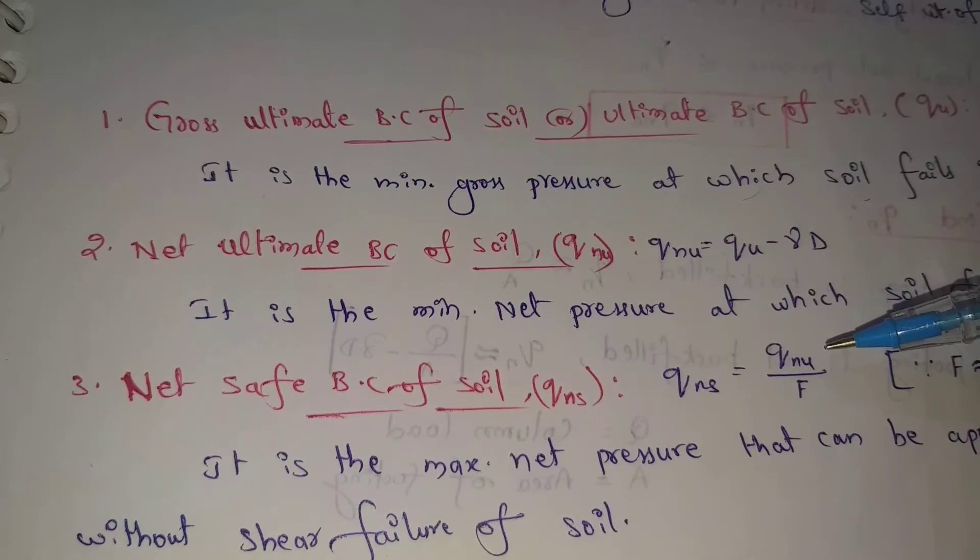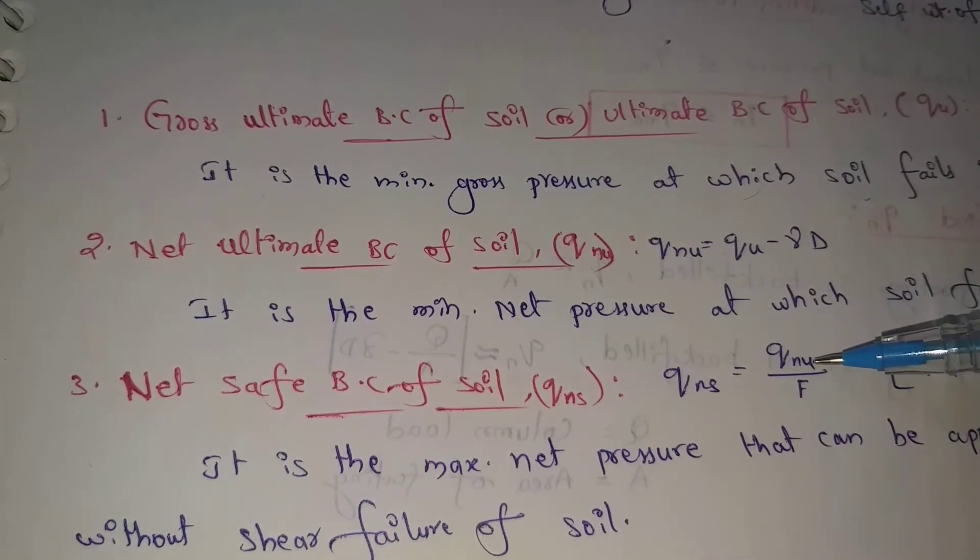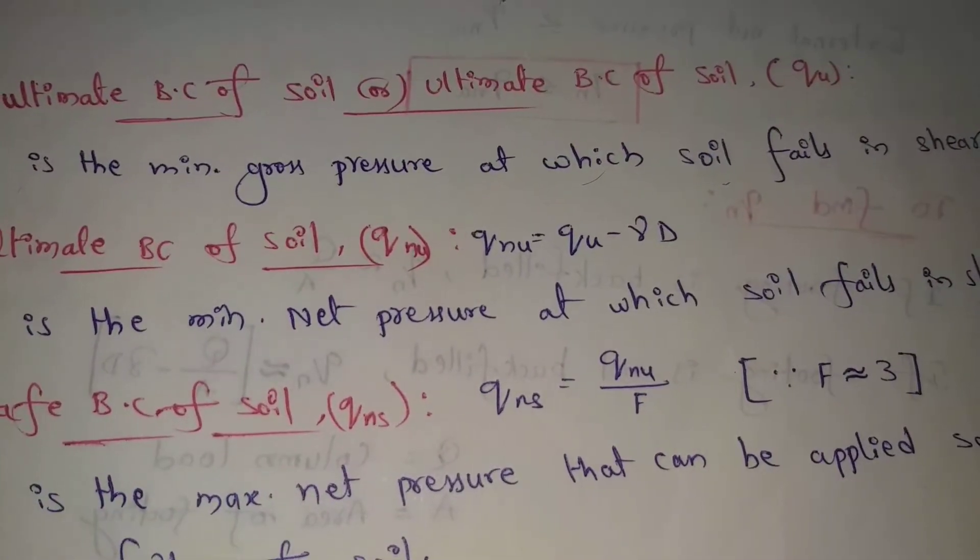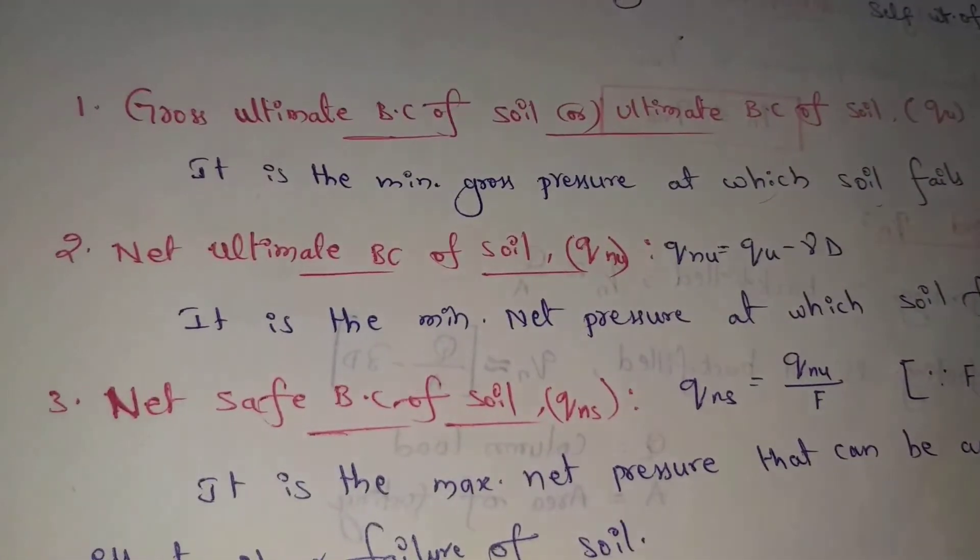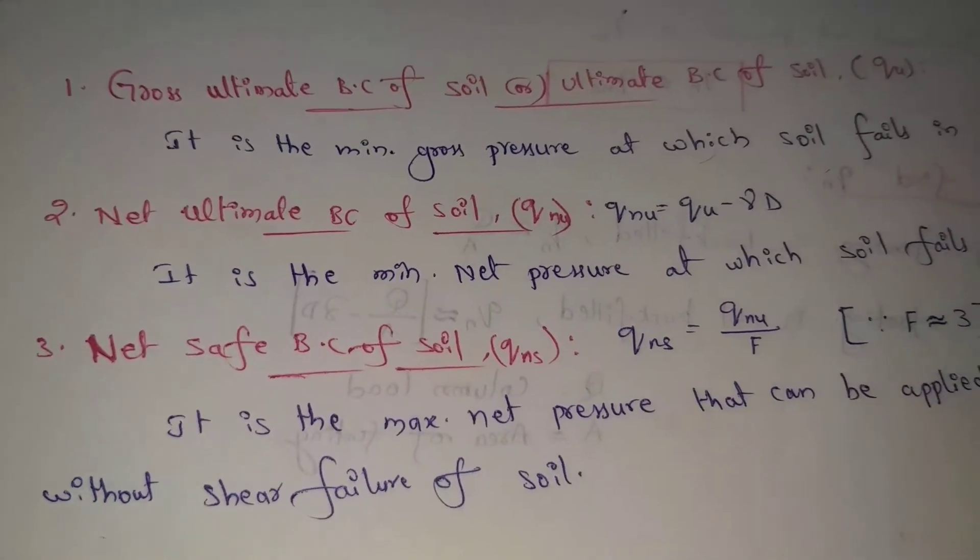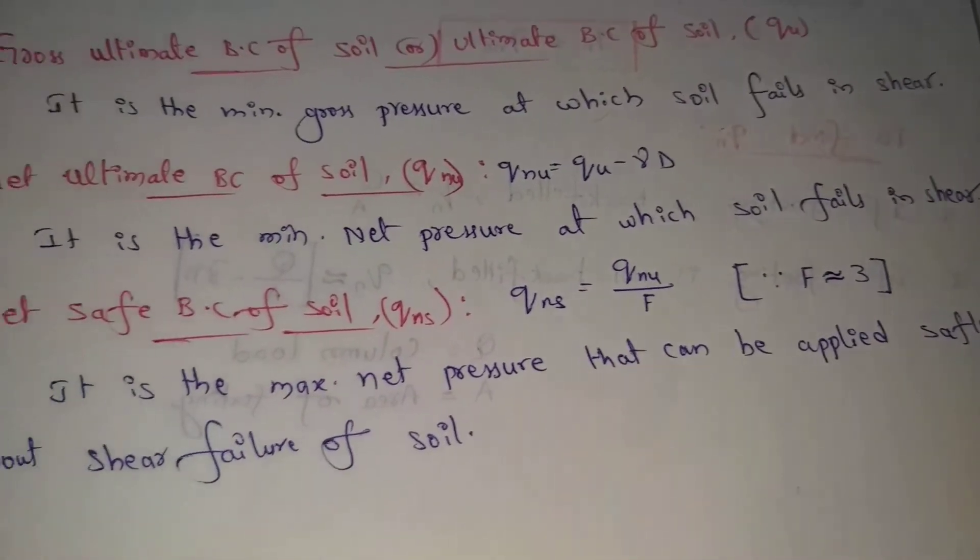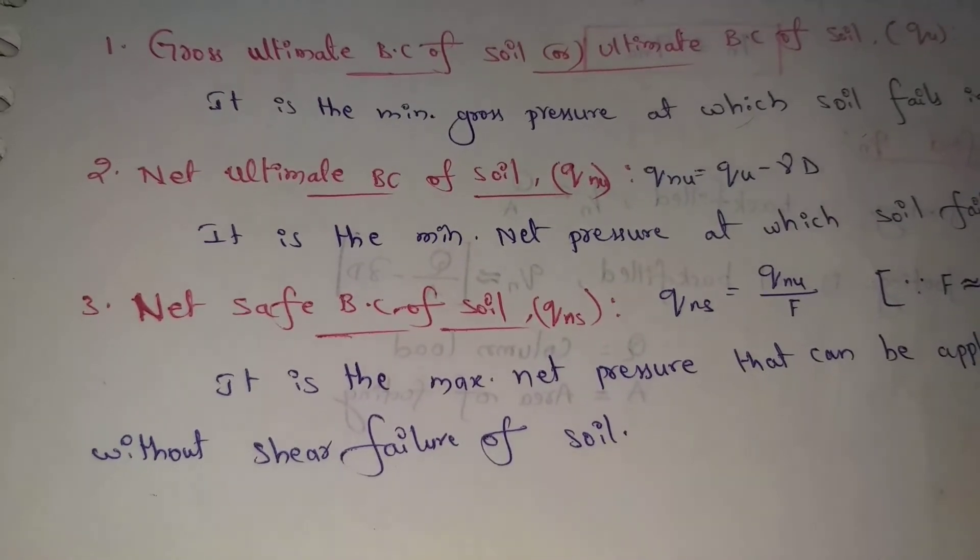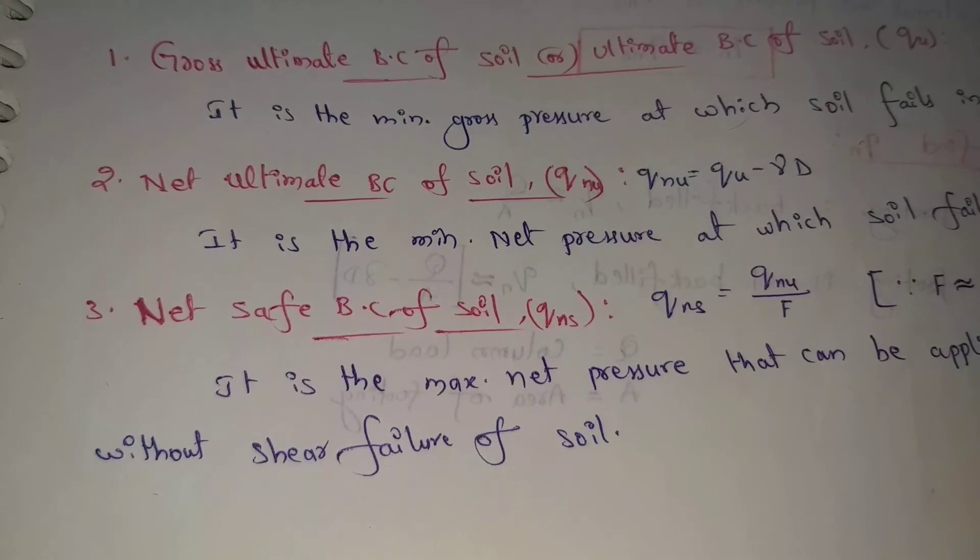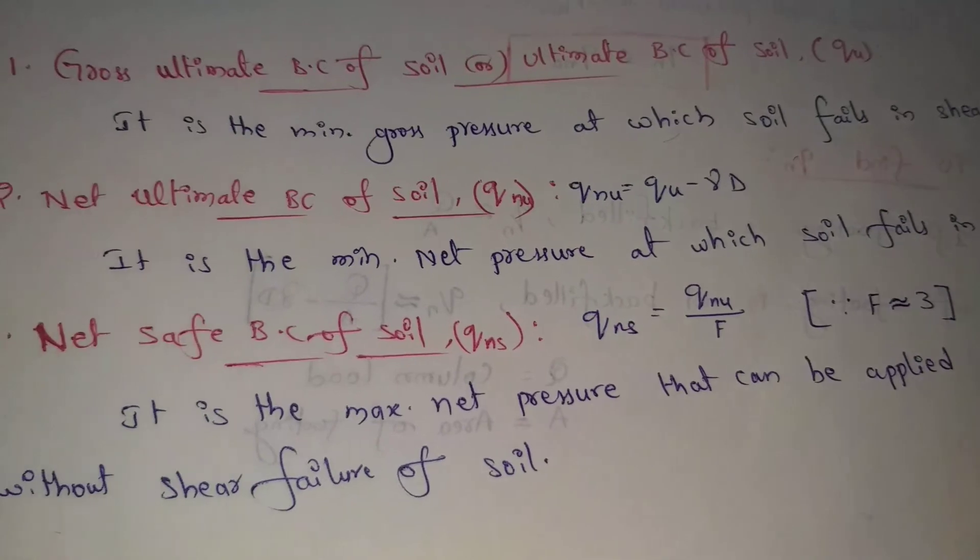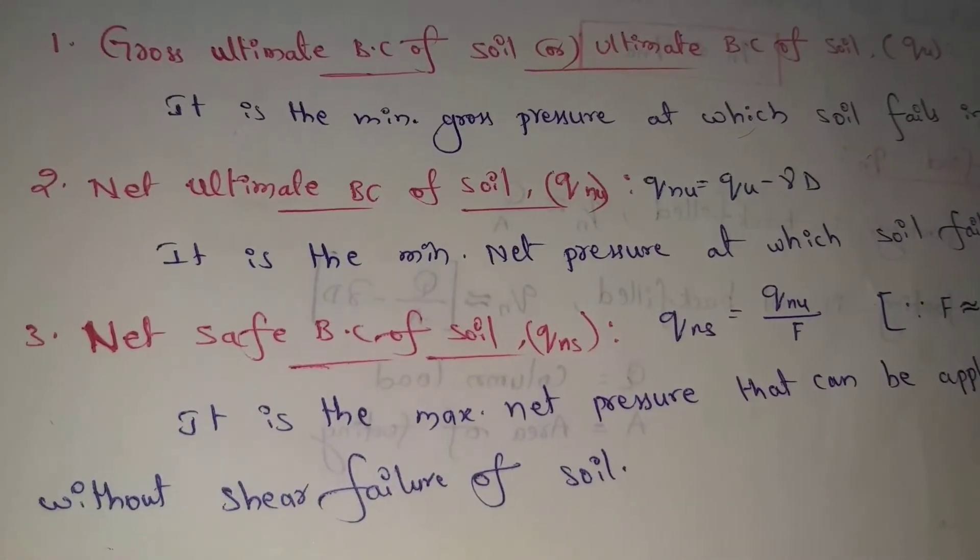Net safe bearing capacity of soil. Small q_ns. Net bearing capacity of soil equal to small q_nu, net ultimate bearing capacity of soil, by F factor of safety. Factor of safety is nearly 3.